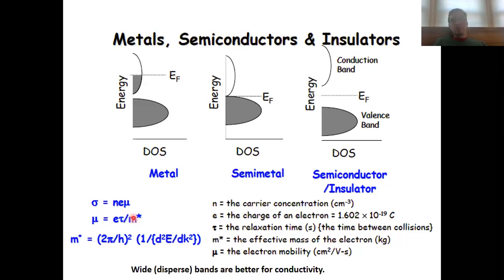The effective mass of the electron is determined by the bandwidth, which was shown by this formula here. So the wider the band is, the smaller the effective mass, and therefore the larger the electron mobility.